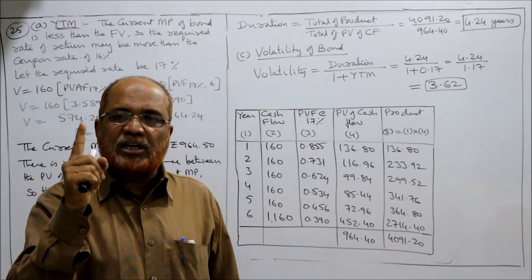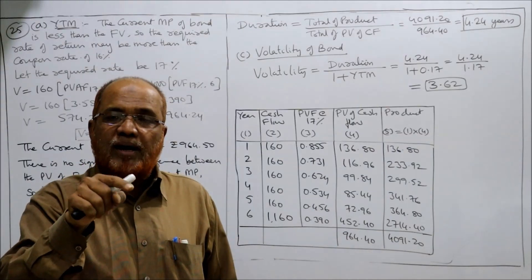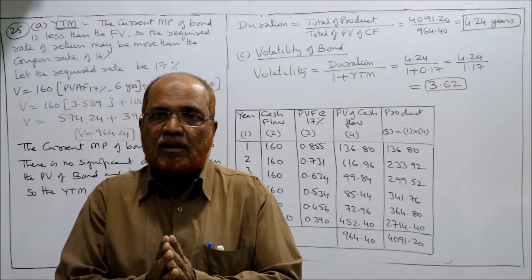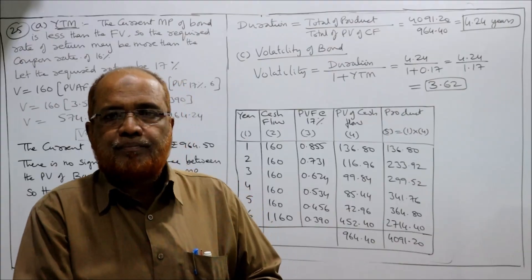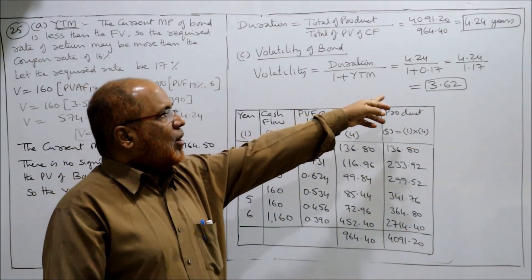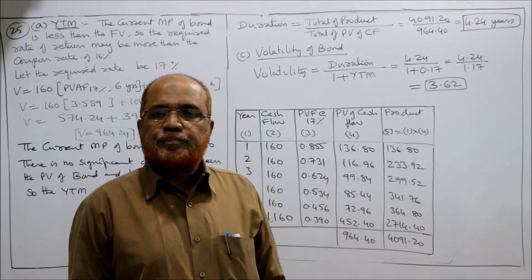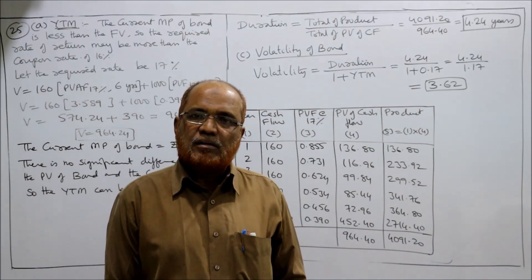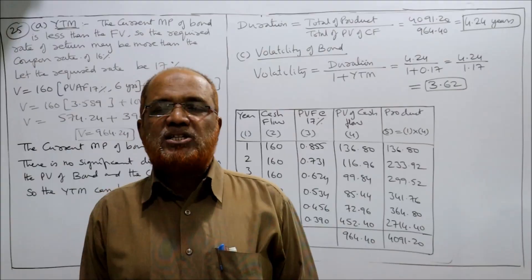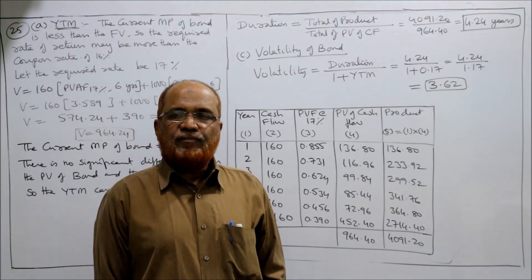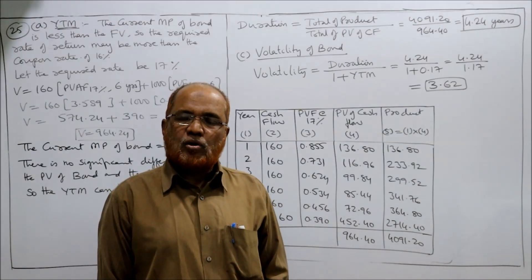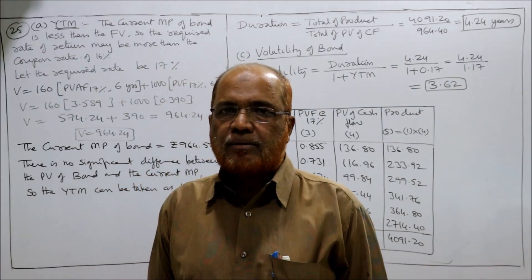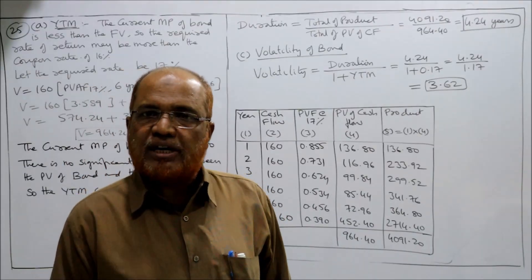The volatility is 3.62, which means if there is a 1% change in the interest rate, there is a 3.62% change in the bond price. Write this sentence: the volatility we got is 3.62, which means if there is a 1% change in the interest rate, it leads to a 3.62% change in the bond price.